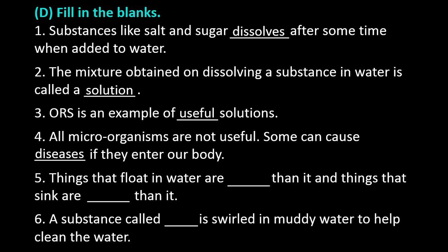Question number 5: Things that float in water are _____ than it, and things that sink are _____ than it. Answer: Things that float in water are lighter than it, and things that sink are heavier than it. Question number 6: A substance called _____ is swirled in muddy water to help clean the water. Answer: A substance called alum is swirled in muddy water to help clean the water.